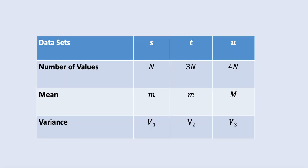To summarize what we are provided: we have three data sets s, t, and u. If I consider the number of values in data set s as n, then in data set t that is twice, so it becomes 2n. And in u, we are combining both, so this becomes 3n. The mean is equal, so data sets s and t each have mean m. For data set u, we don't know right now, so let's consider that as a bigger M. And for the variance, those are different, so I will consider v1, v2, and v3.